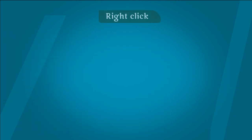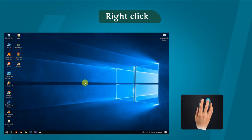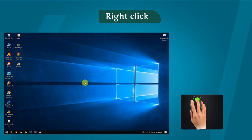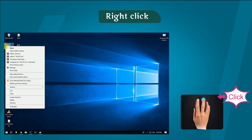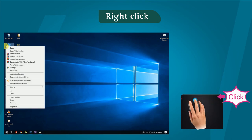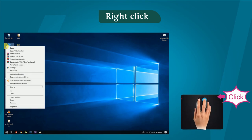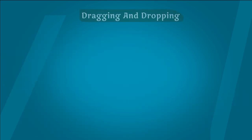Right click — Right mouse button को एक बार press करके release करने पर, select किये गए item की properties की list स्क्रीन पर display होती है।